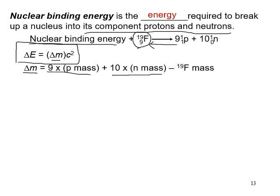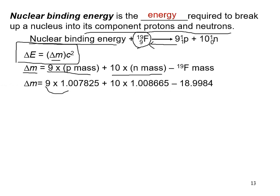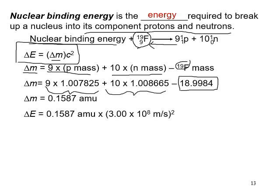The mass defect is calculated by taking the number of protons times the proton mass plus the number of neutrons times the neutron mass, then subtracting the actual measured mass of the atom — determined by a mass spectrometer, not from the periodic table. Once you calculate this mass defect, you plug it into E = mc² to get a value in amu·m²/s². Converting amu to kilograms using the provided conversion factor gives the binding energy in joules.